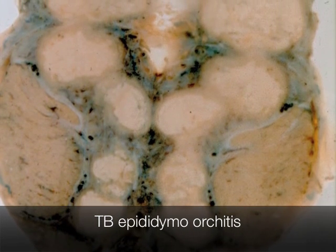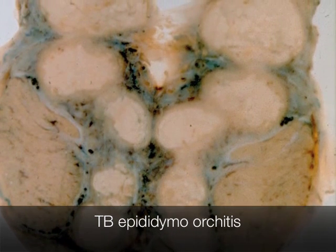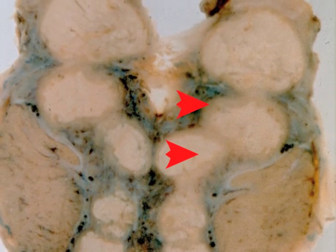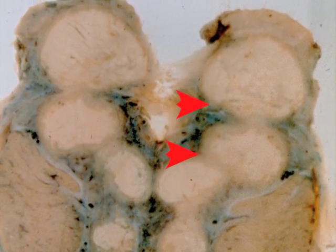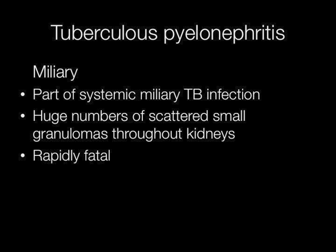This kidney shows the typical features of tuberculous pyelonephritis due to miliary TB, as part of a systemic miliary TB infection. There are huge numbers of scattered small granulomas throughout the kidney, and the condition is rapidly fatal.